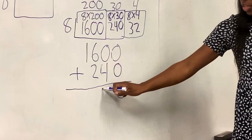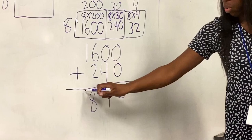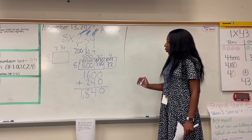Zero plus zero is zero. Zero plus four is four. Six plus two is eight. And I'm just going to bring down the ones since nothing is there. So that's 1,840.